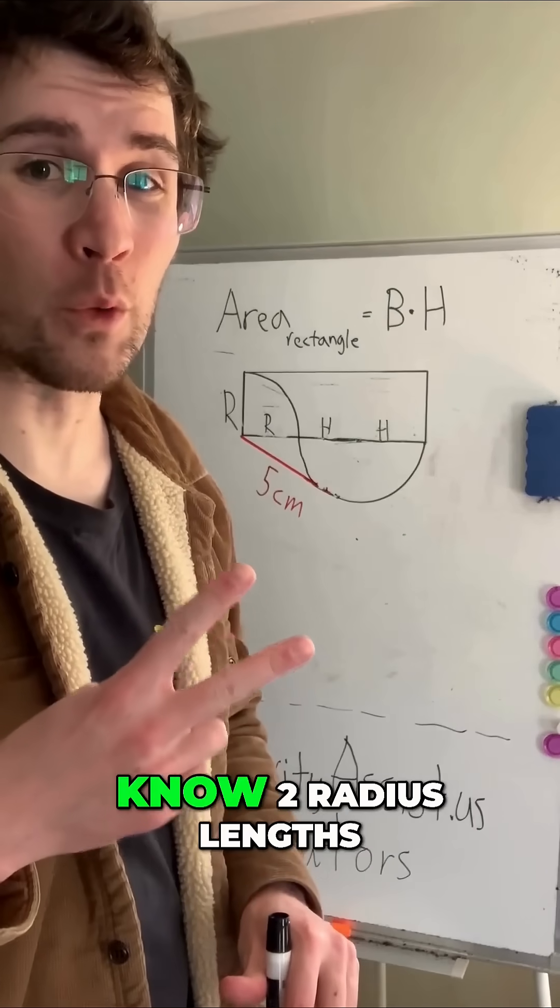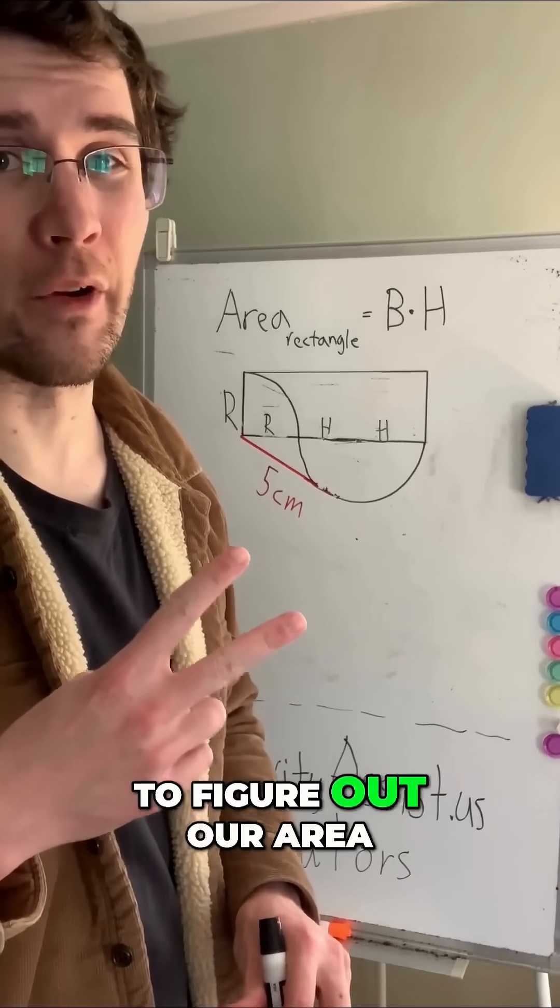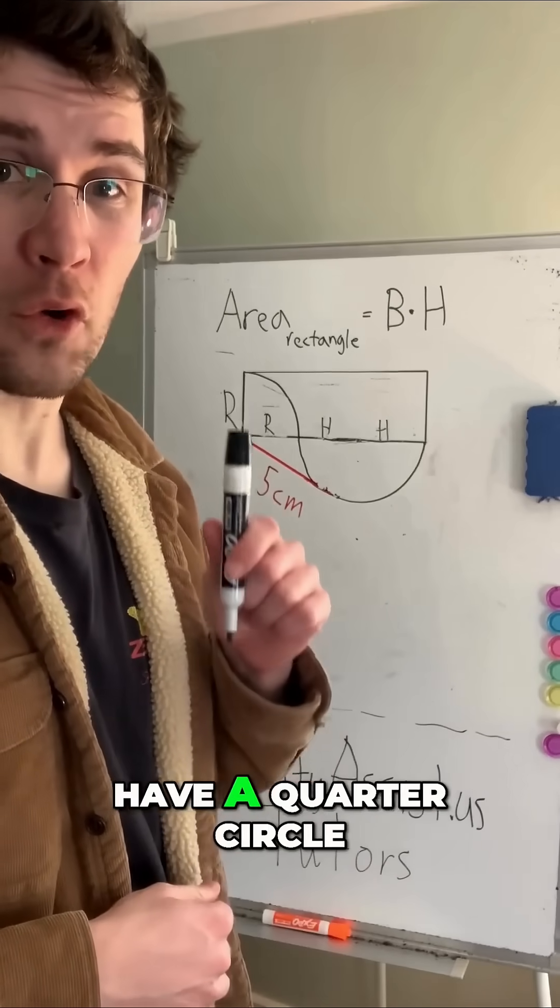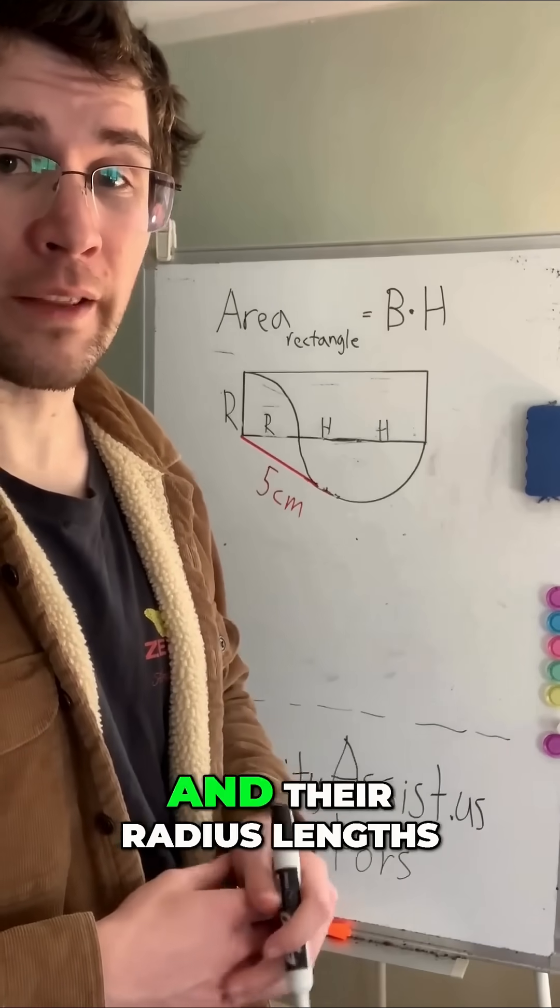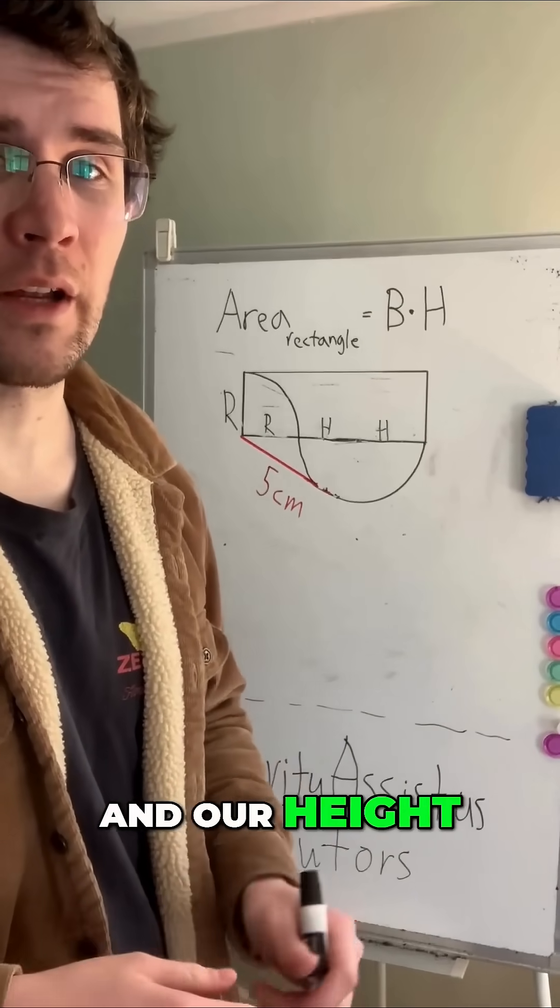How quickly can we find the area of this rectangle? Oddly enough, we only need to know two radius lengths to figure out our area. That's because we have a quarter circle and a half circle, and their radius lengths make up our base and our height.